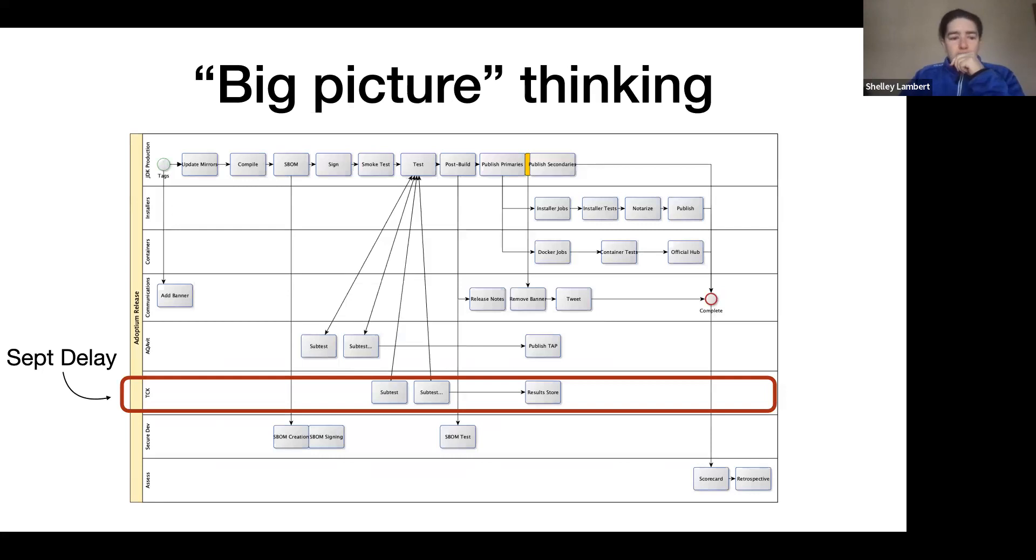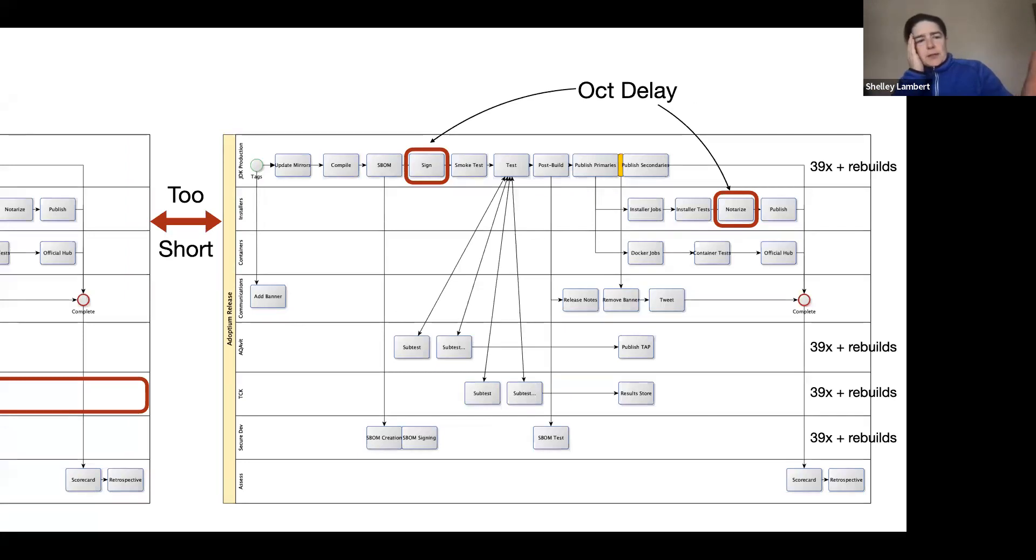So the big picture thinking then was the biggest delay in September was in this swim lane, TCK. Everything was blocked until we had the actual material. So on the bright side, the moment we received the TCK material, everything else had been completed and we were ready to go and we delivered things within zero to three days. However, as you finish the September release, you don't have enough of a gap between the next one that starts. So we have too short of a time, no chance to kind of recover, and we head directly into our October release.